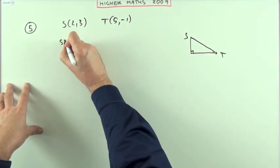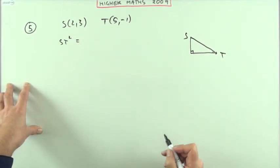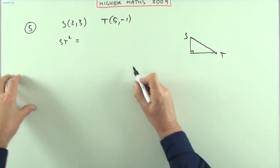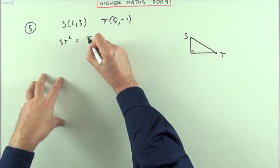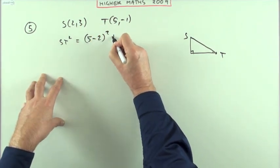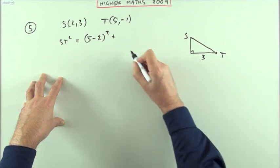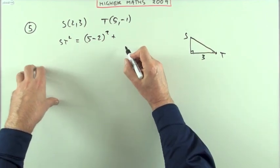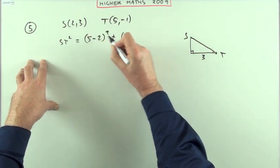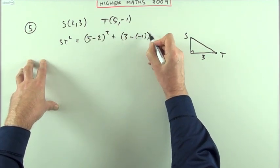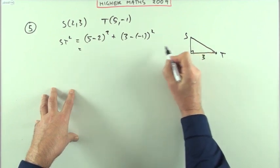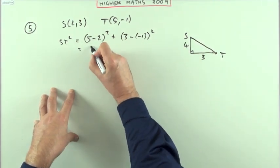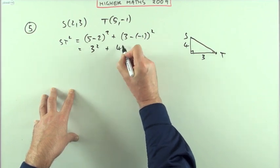So what would the distance be? ST squared would be—what's the difference along? What's the difference in the x-coordinates? Well, that would be 5 take away 2 for this part, so that's 3. What's the difference up and down? Well, that's going to be 3 take away negative 1 squared. That part comes to 4. You can see it's a 3-4-5 triangle. I'll finish it off here.